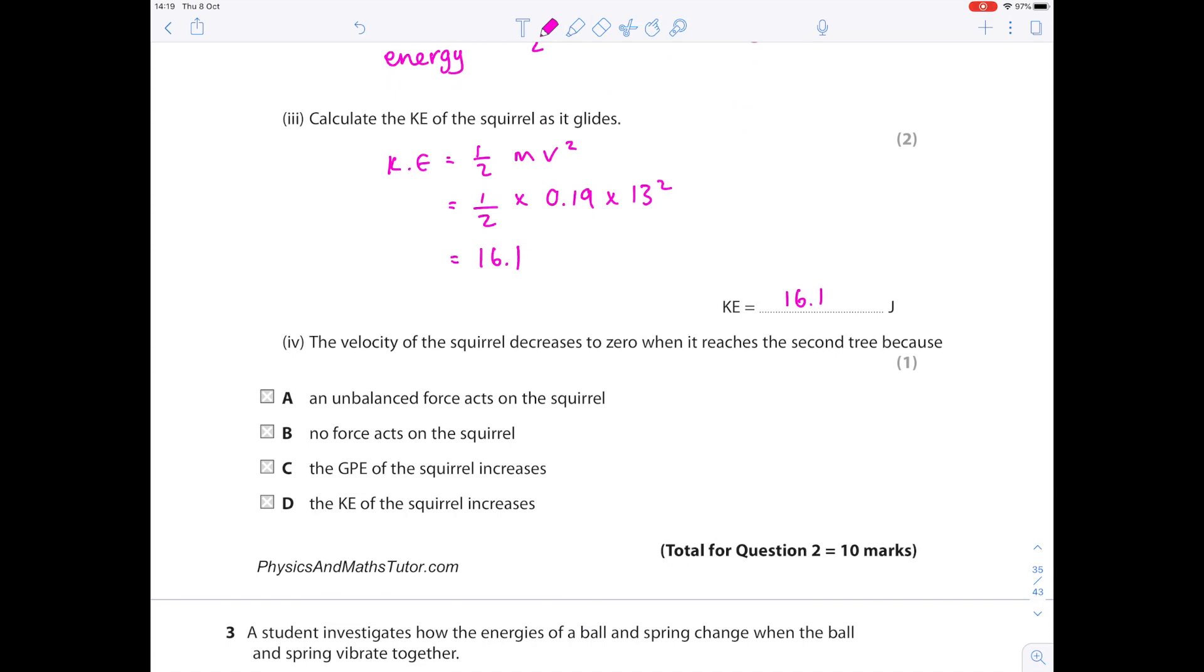The velocity of the squirrel decreases to zero when it reaches the secondary because. Make sure you go through each of these options in turn and decide if they're suitable or not. A: An unbalanced force acts on the squirrel. Yes that's true. B: No force acts on the squirrel. Well that's not true. The GPE of the squirrel increases. Well landed on the secondary which is lower so that would be that it has decreased. That's why that's wrong. The kinetic energy of the squirrel increases. Well it's stopped moving so that's wrong, which is why A is the correct answer.